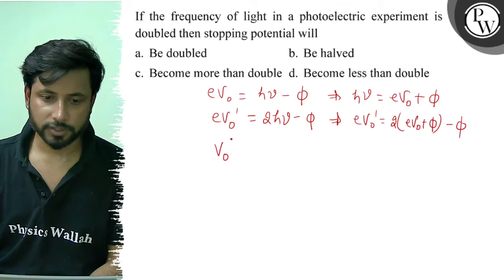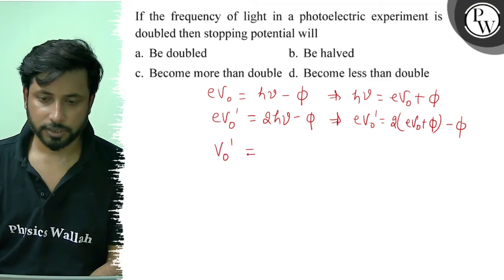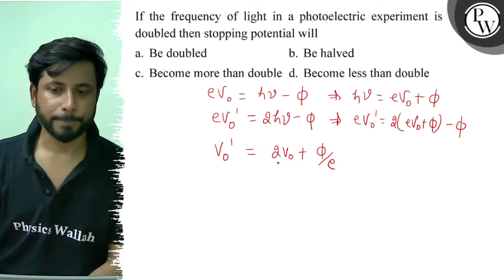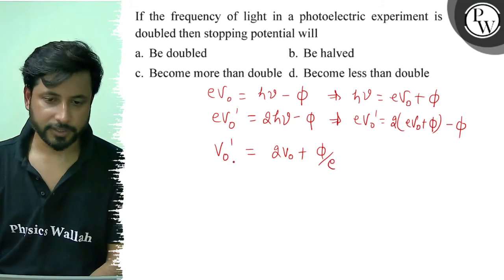So now we will solve the value. eV₀ dash equals to 2V₀ plus phi by e. 2V₀ plus phi by e.